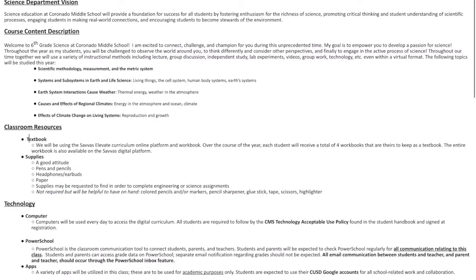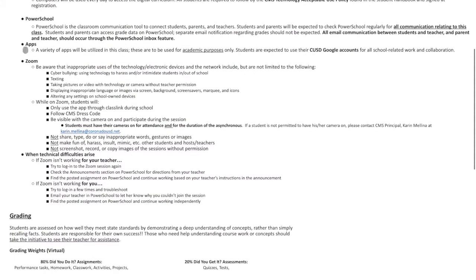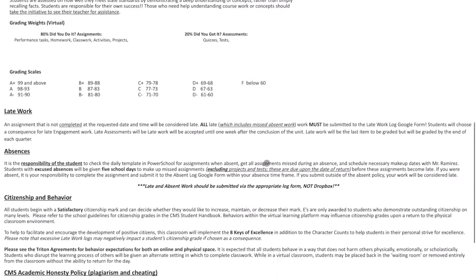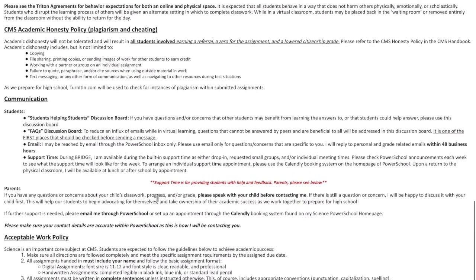Our resources that we're going to be using is going to be our school class book over Savas, as well as the supplies we'll be going over, which is number one, a good attitude, as well as pen paper, and a way to be able to get online to access your Savas class. Additional information on computers, PowerSchool, apps can be found, as well as TMS technology policy, as well as our Zoom technology policy as well. Grading, once more, is broken between 80% assignments of performance tasks, homework, classwork, activities, and projects, and 20% quizzes, tests, and exams. The grading scale can be found here as well, as well as information on late work, absences, citizenship and behavior, our academic policy, communication, and the acceptable work policy. I encourage you to check it out. It's always available on PowerSchool.